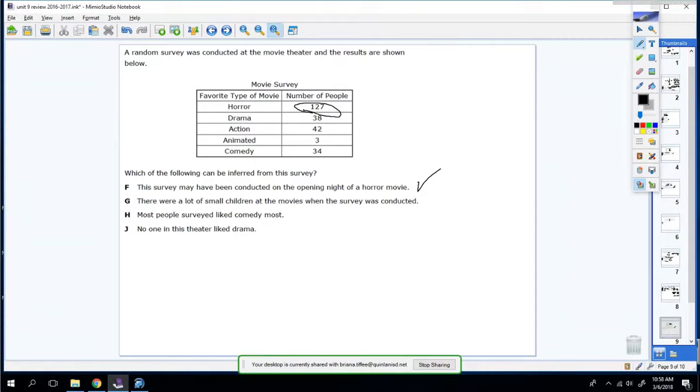There were a lot of small children at the movies. Well, it does not tell me anything about the people's age. So wrong. Most people surveyed like comedy the most. That's false because there's more action and more horror. No one in the theater liked drama. That's again false because there's 38 people who did go see drama. So it's wrong. So F has to be correct.